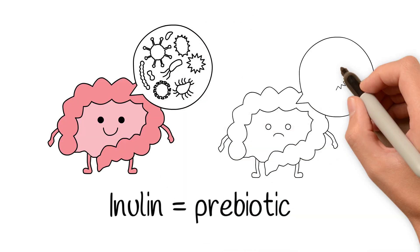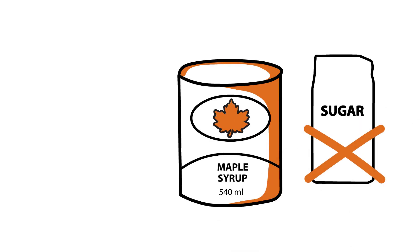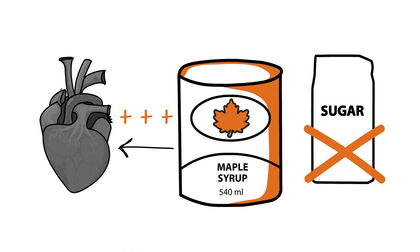When your gut is healthy, it helps your immune system function properly. When you replace refined sugars with maple syrup, it acts as a functional food, providing cardiometabolic health benefits.